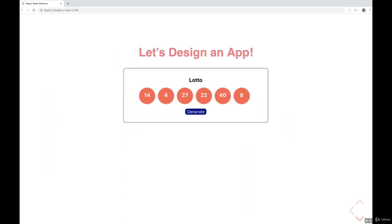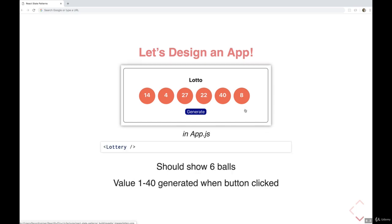So imagine we want this functionality where we have six lottery balls and then a button that you can click to generate new numbers. All of these numbers, the values are going to be between 1 and 40 by default, and there should be six balls also by default. So we click generate, and we should get new numbers, six new balls showing up from 1 to 40.